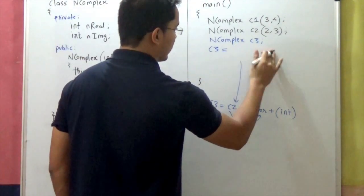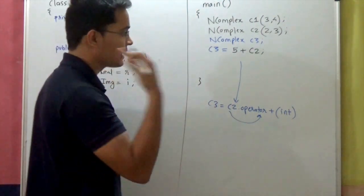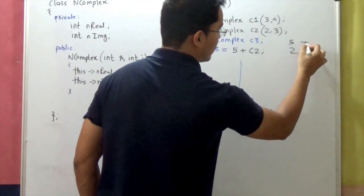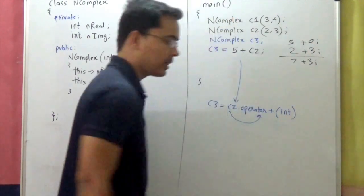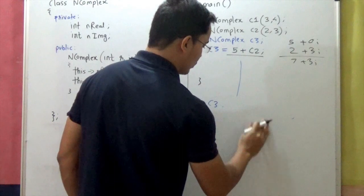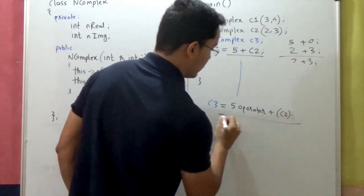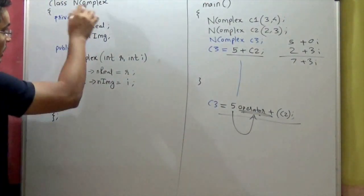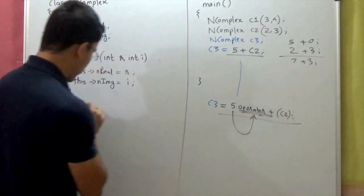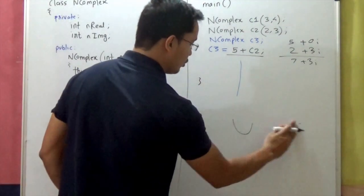But what if we write c3 = 5 + c2? The result should be the same — 5 is 5+0i, so 7+3i. The problem is how to resolve this call. You cannot say 5.operator+(c2), because 5 cannot invoke operator plus written inside n complex class — 5 is not an object of type n complex. So we cannot handle this situation with a regular member function.